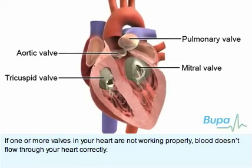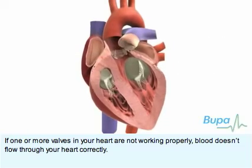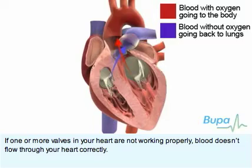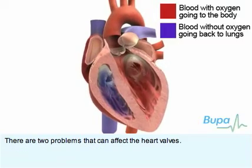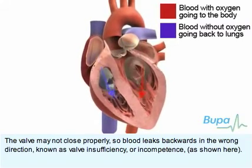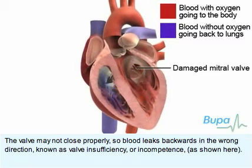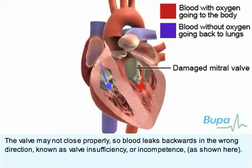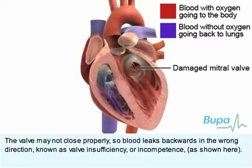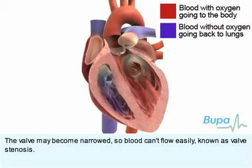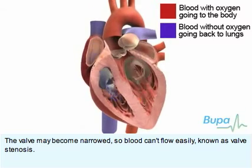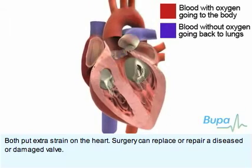If one or more valves in your heart are not working properly, blood doesn't flow through your heart correctly. There are two problems that can affect the heart valves. The valve may not close properly, so blood leaks backwards in the wrong direction, known as valve insufficiency or incompetence. The valve may become narrowed, so blood can't flow easily, known as valve stenosis. Both put extra strain on the heart.